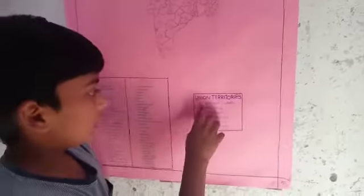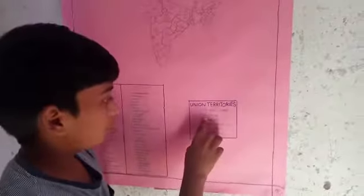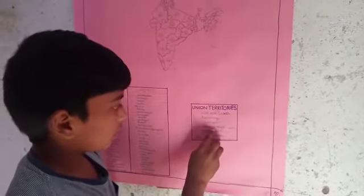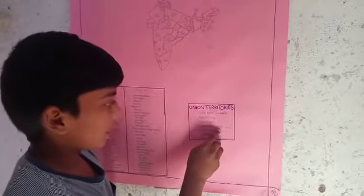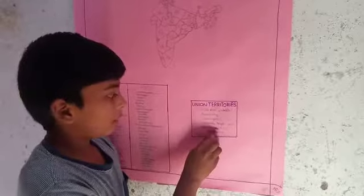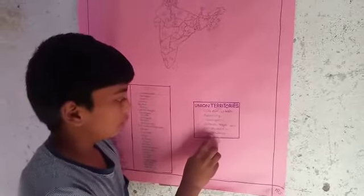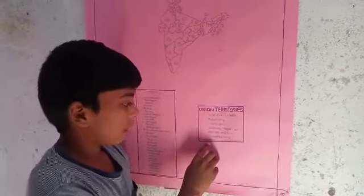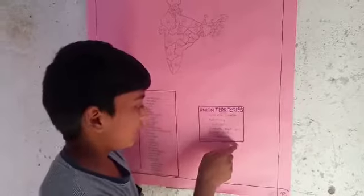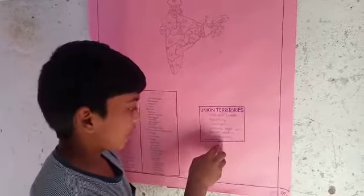Now we are talking about union territories. Dilli. Paducherry. Chandigar. Dharthanta Nagar, Haivali. Dhaman and Dheeru. Lakshadeep. Annaman and Nicobar Islands. Ladakh.